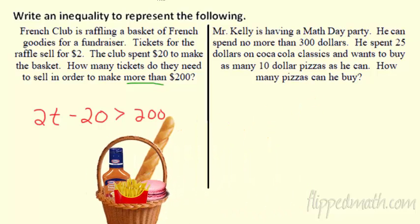Let's bring this over here and let's talk about Mr. Kelly. Mr. Kelly's having a math day party, classic math day party. He can spend no more than $300. So he only has $300. So no more than $300. He is going to spend $25 to buy some Coca-Cola classics. And he wants to buy as many $10 pizzas as he can. How many pizzas can he buy? So this was a little bit different. This one's like a running total. So Mr. Kelly has spent what? He spent $25 so far, Coca-Cola classics.